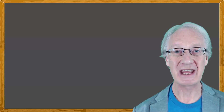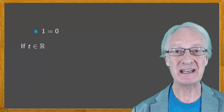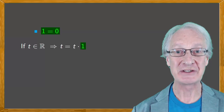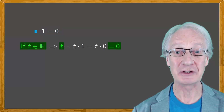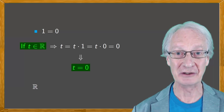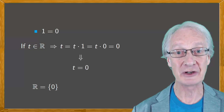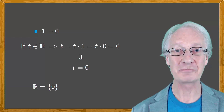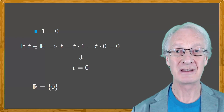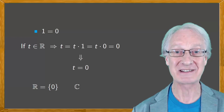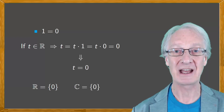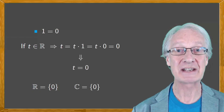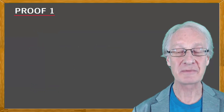To begin, think about the implications if one did equal zero. If t is any real number, then t equals t times one. But if one equals zero, this is t times zero, which is zero. We'd have to conclude that every real number is zero — and not just the real numbers, but the complex numbers too. Since complex numbers can be expressed as pairs of real numbers, the only complex number would be the pair (0, 0).